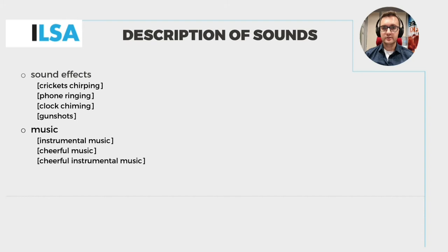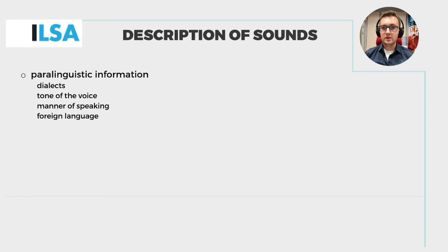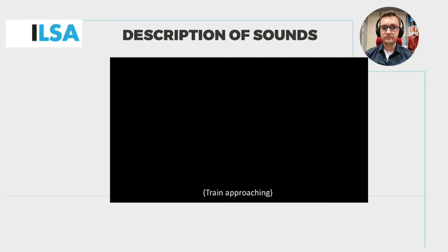SDH subtitles also need to name relevant sounds that are otherwise difficult to identify. These include background music, sound effects, as well as some paralinguistic information, such as dialects, tone of voice or manner of speaking. Let's have a look at some examples.